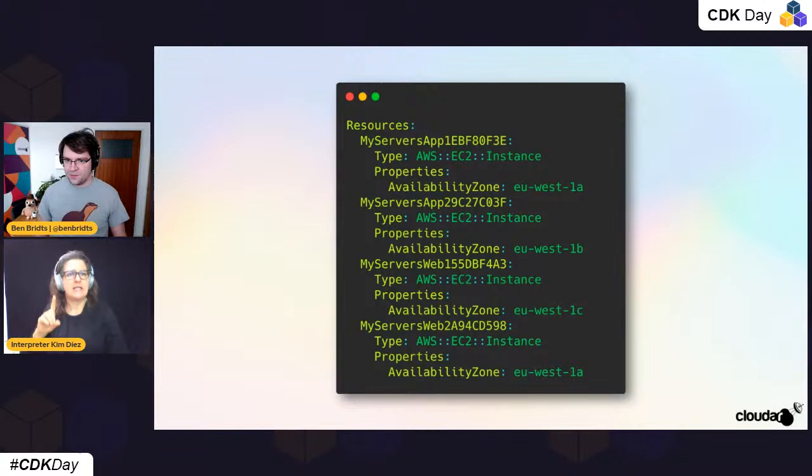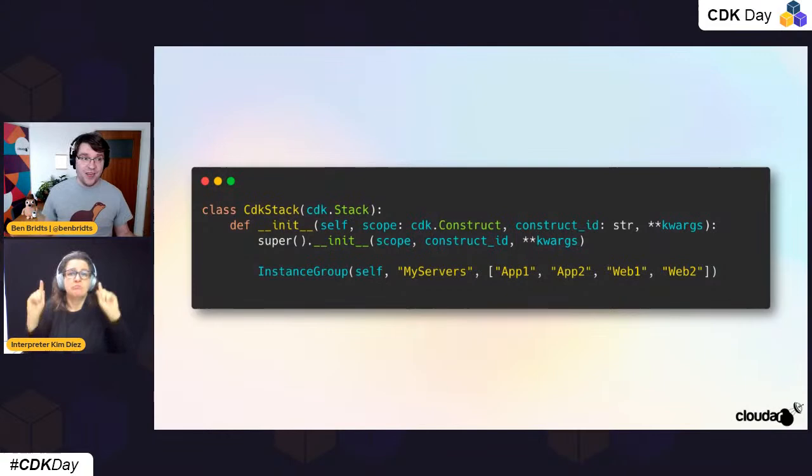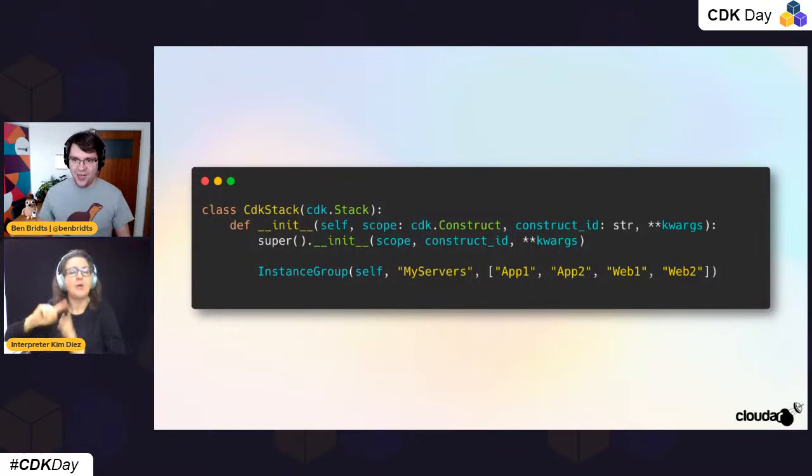If we synth and deploy our stack, the YAML output passed to CloudFormation creates two sets of two servers — two app servers at the top, two web servers at the bottom — spread out over three availability zones: A, B, C, A. That all worked great, we successfully finished the migration and hit that deadline. Everything is running in the cloud.